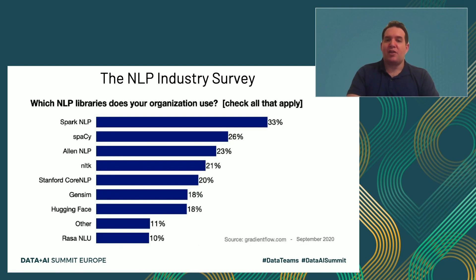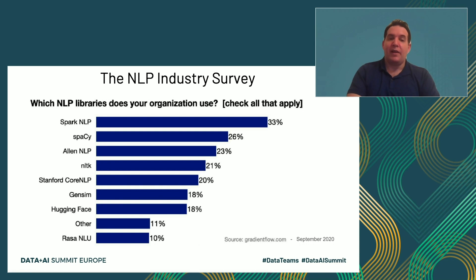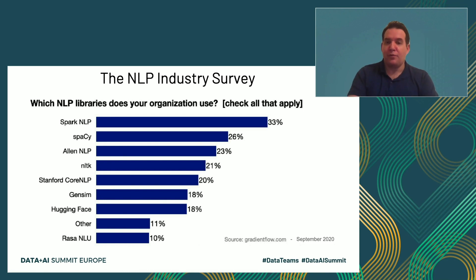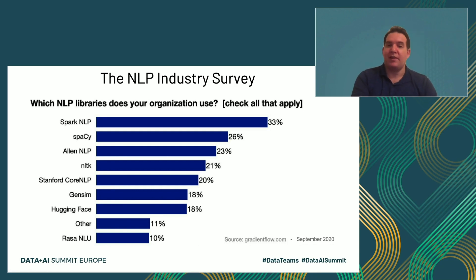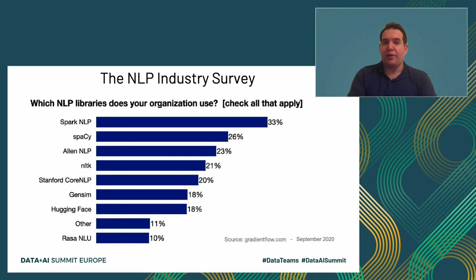An NLP industry survey run during July and August, published by Gradient Flow last month, targeted 571 NLP practitioners from all over the world. It confirmed that Spark NLP is the most widely used library by people in the industry putting models into production. Spark NLP is used by a third of respondents overall, and within the healthcare space specifically, it is used by 54% of respondents.